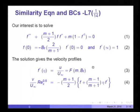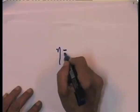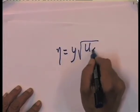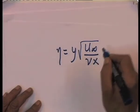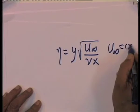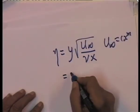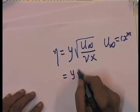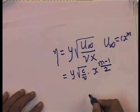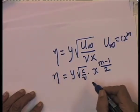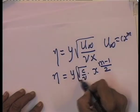Just by way of reminder, the similarity variable η is nothing but η = y × √(u∞ / νx), where u∞ = c × x^m. Therefore this becomes c/ν × x^((m−1)/2), which is the stretching parameter.